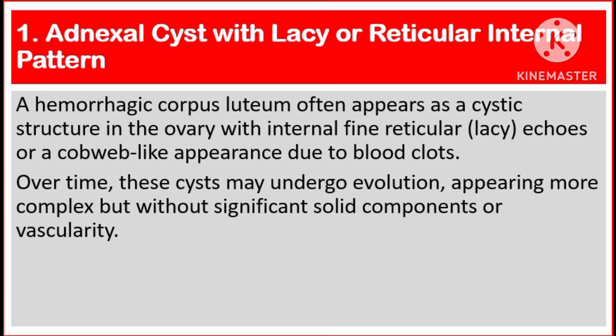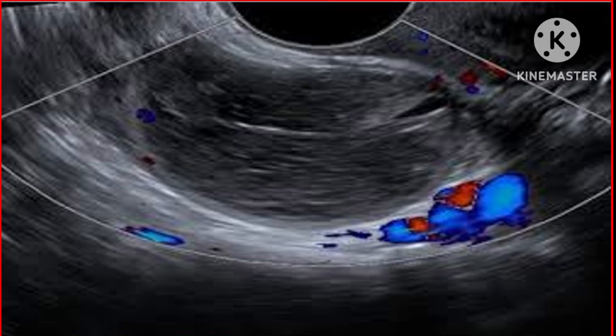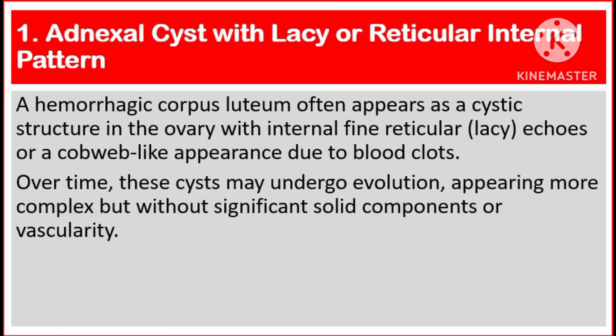Number one, adnexal cyst with lacy or reticular internal pattern. A hemorrhagic corpus luteum often appears as a cystic structure in the ovary with internal fine reticular echoes or a cobweb-like appearance due to blood clots. Over time, these cysts may undergo evolution, appearing more complex but without significant solid components or vascularity.